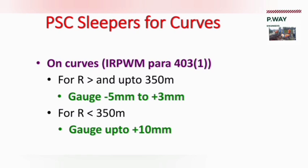The gauge variation in a curved track is: for radius more than 350 meters the gauge should be within −5 mm to +5 mm, and for radius less than 350 meters the gauge tolerance is up to 10 mm.